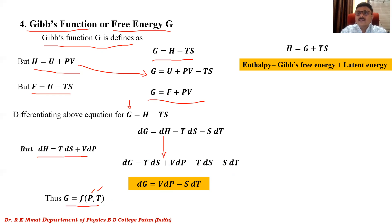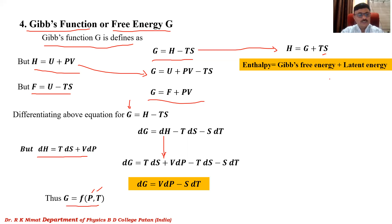We have now seen that all four thermodynamic potentials — internal energy, enthalpy, Helmholtz function, and Gibbs function — are functions of any two variables out of the four thermodynamic variables: pressure, volume, temperature, and entropy. From G = H − TS we also get H = G + TS, where TS is the latent heat energy. From these thermodynamic potentials we will derive Maxwell's thermodynamic relations in the next lecture. Thank you for watching.